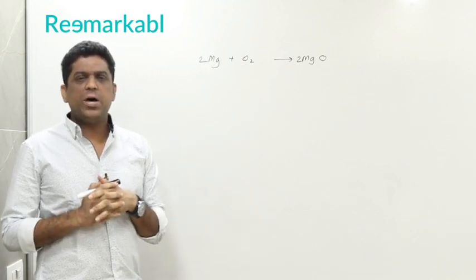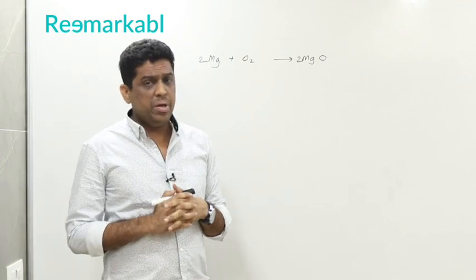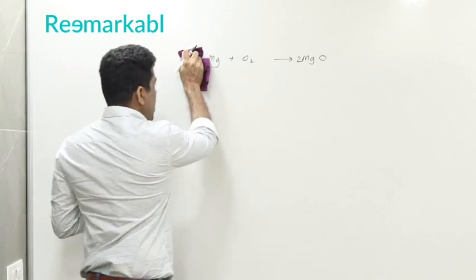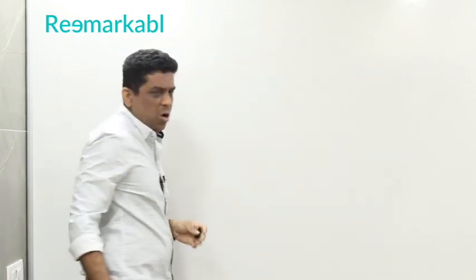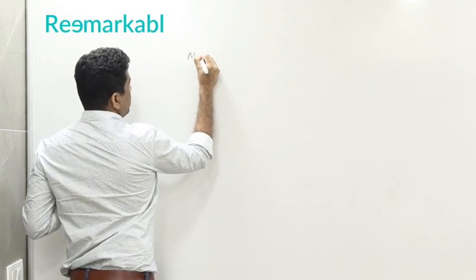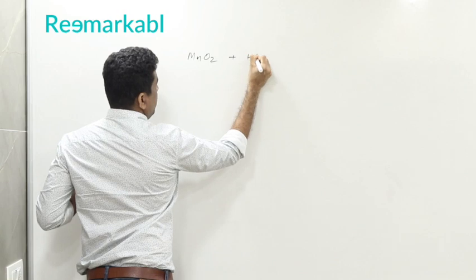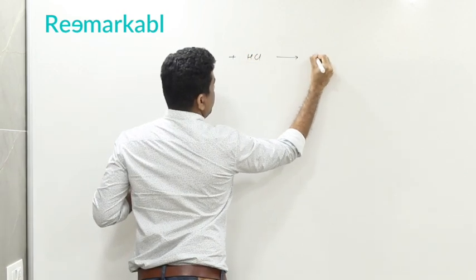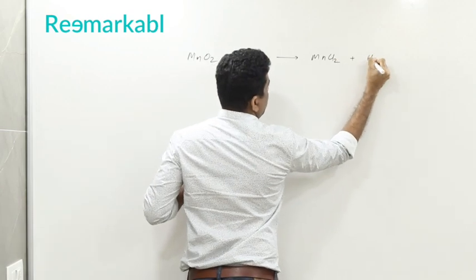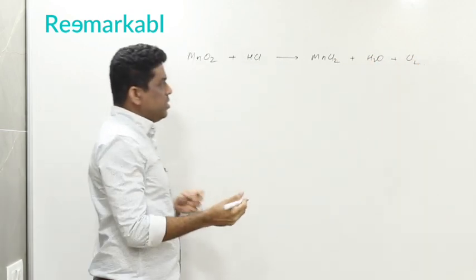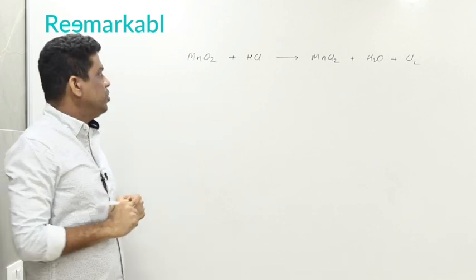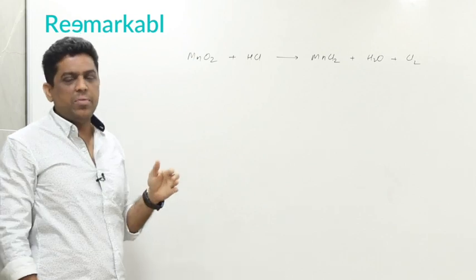You'll get at least five questions to balance in your terminal exams, which may be easy or difficult, so you need to practice a lot. I will solve some examples for you and there are some tricks. For example: manganese dioxide with hydrochloric acid gives manganese chloride, water, and chlorine. We have two reactants and three products. My trick is: start from the left-hand side.